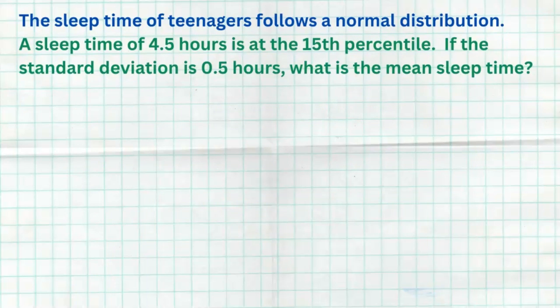Now let's change gears. The sleep time of teenagers follows a normal distribution. A sleep time of 4.5 hours is at the 15th percentile. So below 4.5 hours is 15% of the population — remember, percentile is the percentage below. If the standard deviation is 0.5 hours, what is the mean sleep time? To solve this, we first need to find the Z-score, because we know a particular value is 4.5 and we know there's 15% below it.